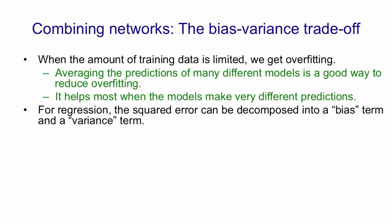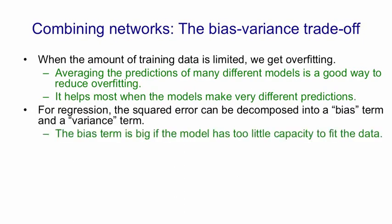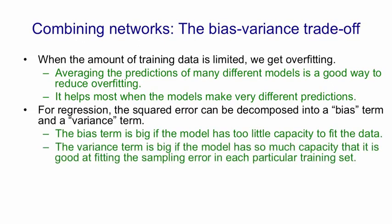For regression, the squared error can be decomposed into a bias term and a variance term, and that allows us to analyze what's going on. The bias term is big if the model has too little capacity to fit the data. It measures how poorly the model approximates the true function.